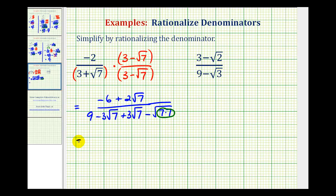So looking at the numerator we'll have negative six plus two square root of seven. Now in the denominator, notice how the two middle terms are opposites, so this simplifies to zero. We have the square root of seven times seven, or the square root of seven squared, so this simplifies to seven. So we have nine minus seven, which is two.